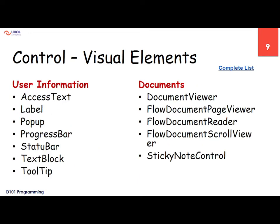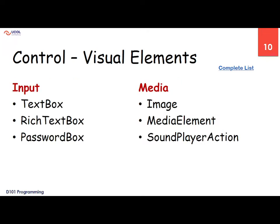We also have selection controls like combo boxes and sliders, navigation, dialog boxes, documents, and input. We can get input from the user — just like console.ReadLine from the command prompt — by having the user type values into a text box, rich text box, or password box. The password box obscures what the user is typing. We can also show images or play videos or sounds.